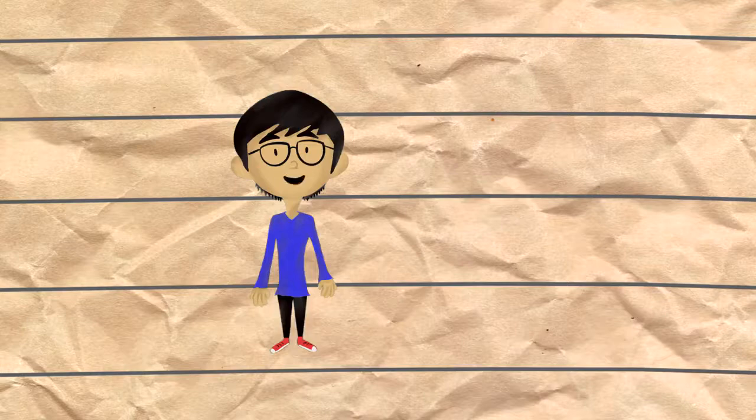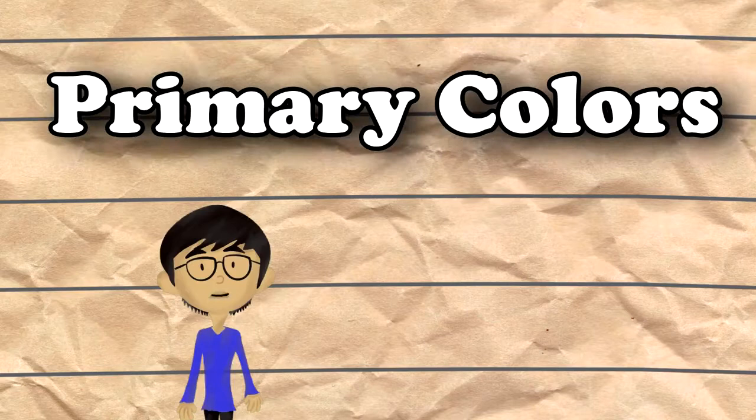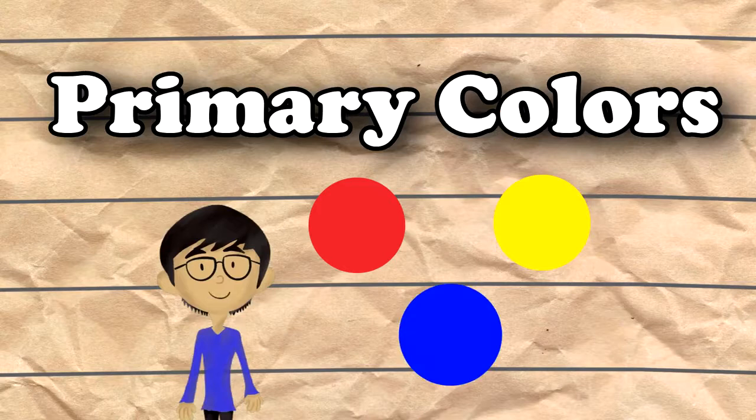What are colors? Colors can be seen by our eyes. There are three colors that we call the primary colors. Primary colors consist of red, yellow, and blue.